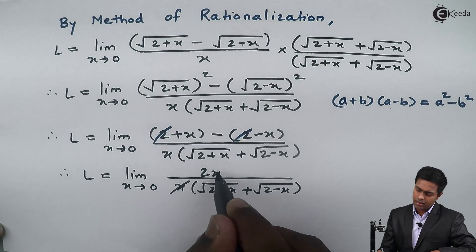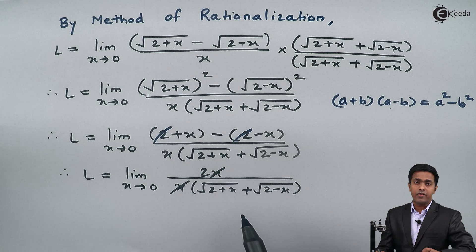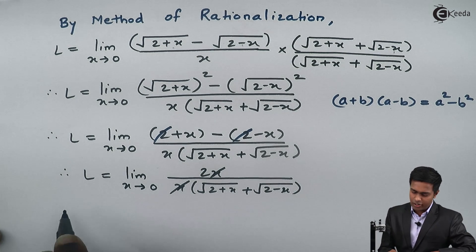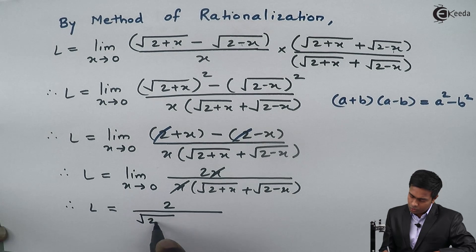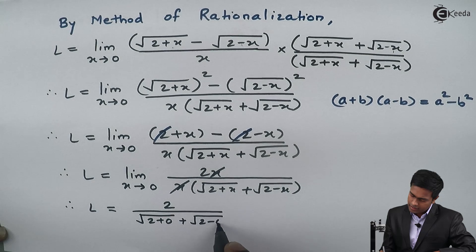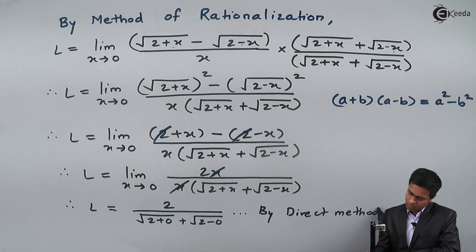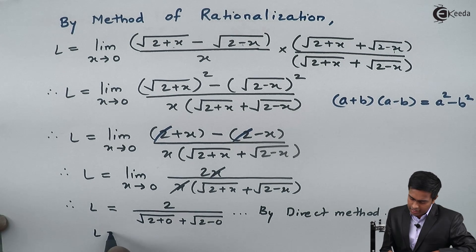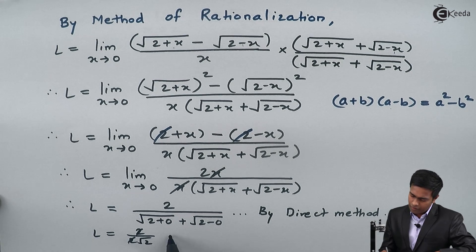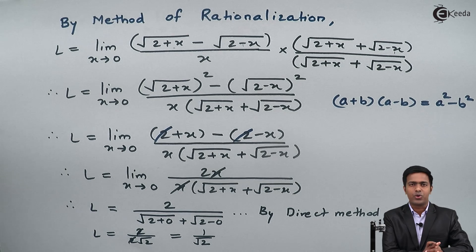For the remaining expression we apply the direct method again. Substituting x = 0, we get 2 over [√(2+0) plus √(2−0)], which equals 2 over [√2 plus √2], that is 2 over 2√2. Cancelling the 2s, we get the answer as 1 over √2. Hence the value of the given limit is 1 upon root 2. Thank you.